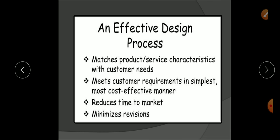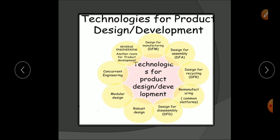An effective design process matches product and service characteristics with customer needs, meets customer requirements in the simplest and most cost-effective manner, reduces time to market, and minimizes revisions. Technologies for product design and development include: design for manufacturing, design for assembly, design for recycling, design for remanufacturing, common platforms, DFD, robust design, modular design, concurrent engineering, and reverse engineering. These are the parameters used to sustain and grow the product in the market.